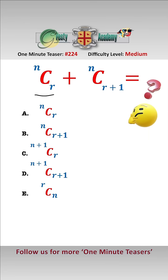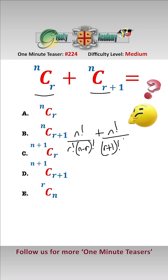By definition, NCR is N factorial over R factorial times N minus R factorial, and NCR+1 is N factorial over R plus 1 factorial times N minus R plus 1 factorial.